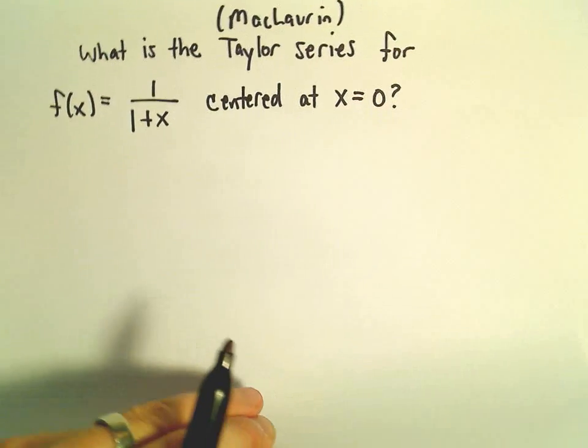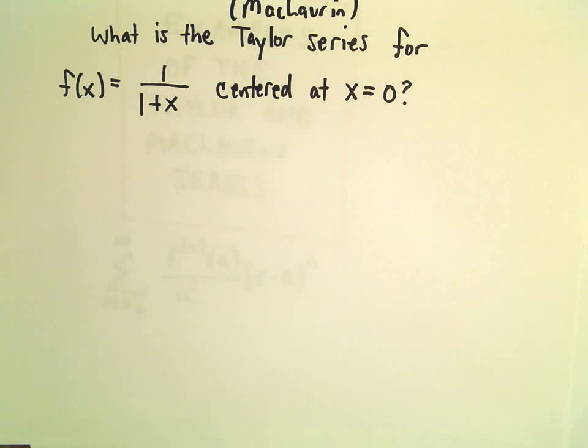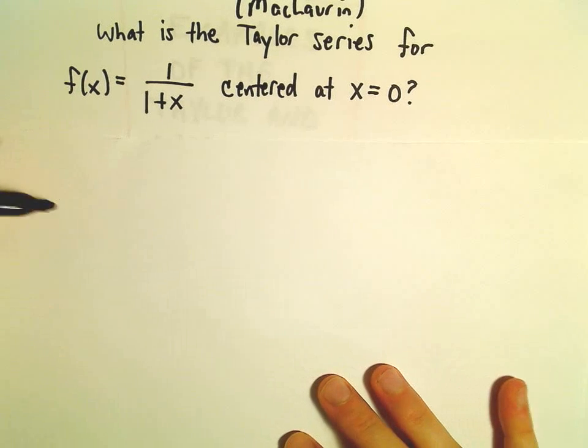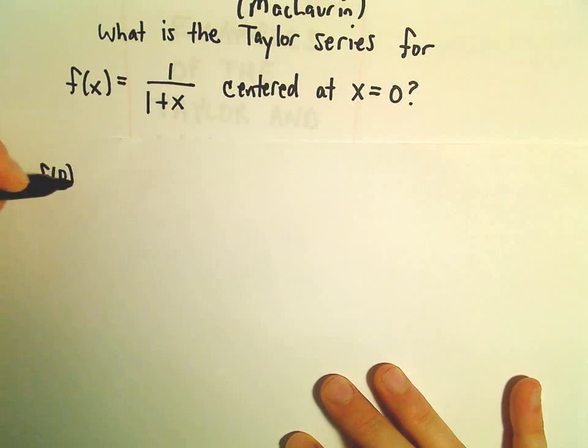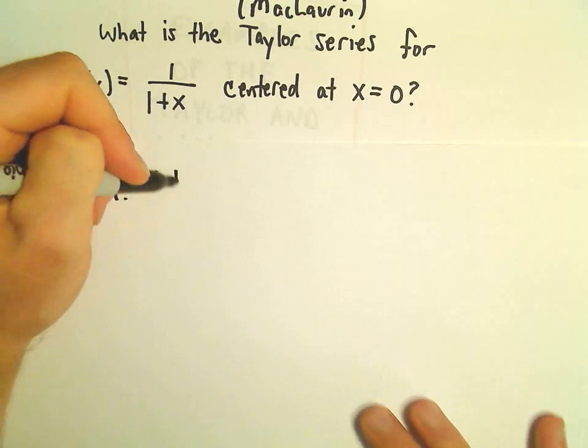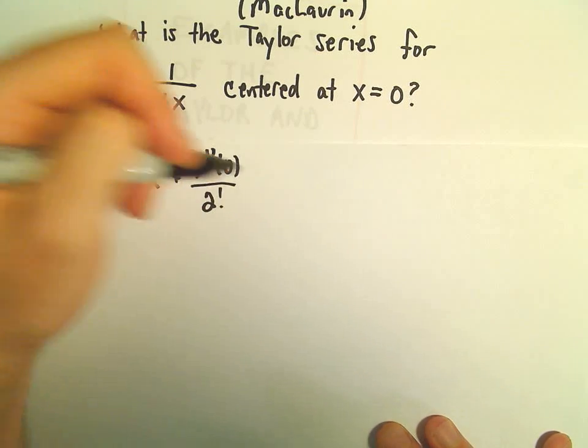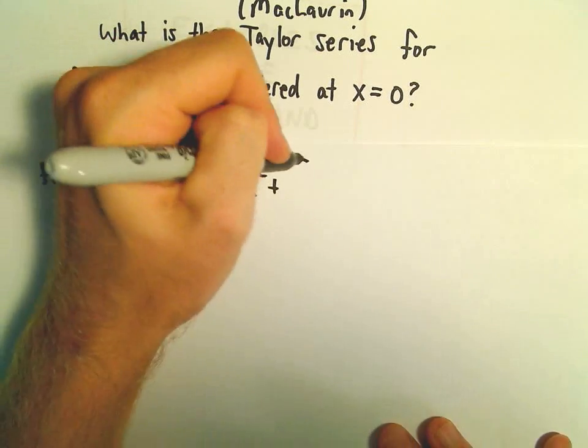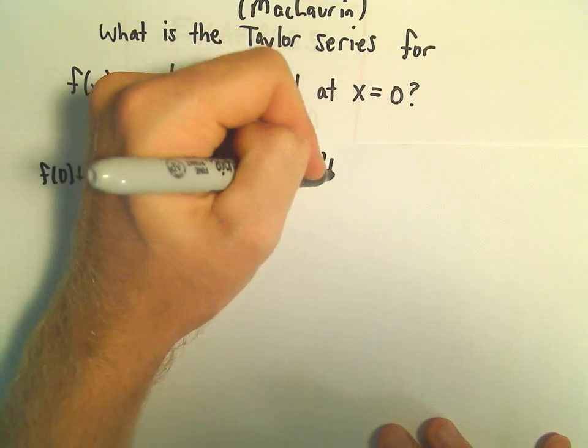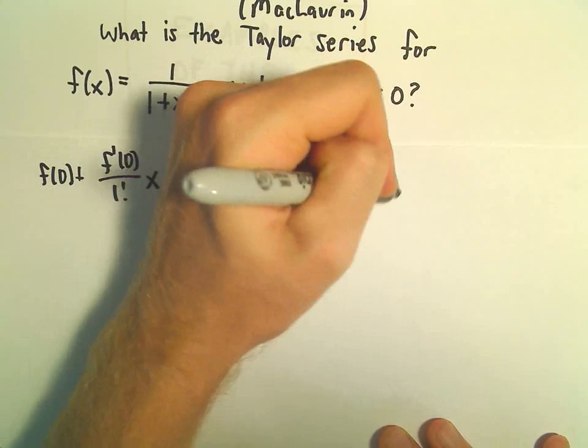So same thing as before, I always write it out generically. So let's do that here. Centered at 0, we'll have f(0) plus f'(0) over 1 factorial x to the first, f''(0) over 2 factorial x squared, and then maybe one more, f'''(0) over 3 factorial x cubed, and then dot dot dot.